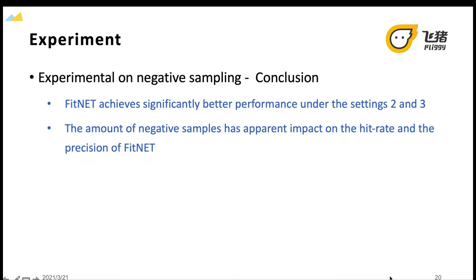We can conclude that, first, FitNet achieves significantly better performance under the setting 2 and 3. This is because there is no restriction on the destination city of negatives in setting 1, and as a result, a good many of samples whose destination city is irrelevant to the user's itinerary are selected as negatives. This indicates that confining the destination city of negative samples to that of the user's itinerary is of vital importance in training a travel-related matching model.